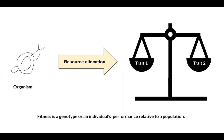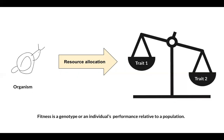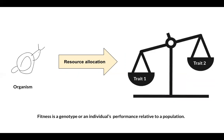A resource allocation trade-off occurs when two traits that increase an organism's fitness cannot be maximized at the same time. This means investing in one trait occurs at the cost of another. I propose an experiment that focuses on trade-offs in a simultaneous hermaphrodite.